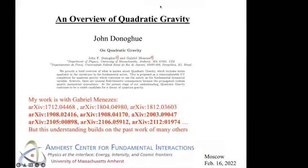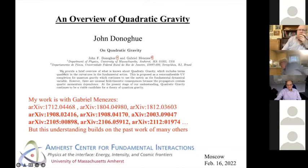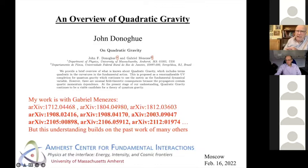Welcome everyone to another IT&T seminar. Today we have John Donahue, who will speak about quadratic gravity. So my topic here is this theory of quadratic gravity. It's in some ways a conservative theory — it's a renormalizable theory for gravity with the metric as the field — but as we'll see, it has some oddities.